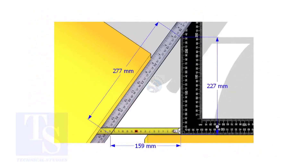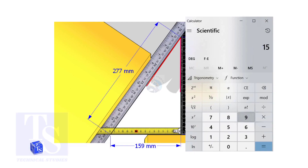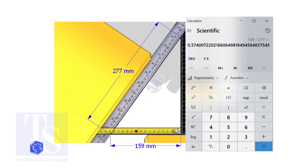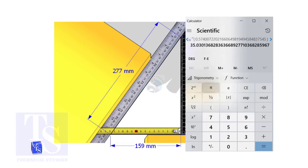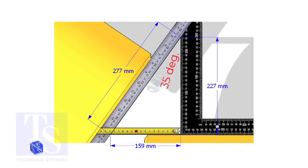Assume that these are the dimensions. Let us calculate the included angle. If you apply the sine rule, the angle will be: 159 divided by 277, shift sine. So the answer is 35 degrees.